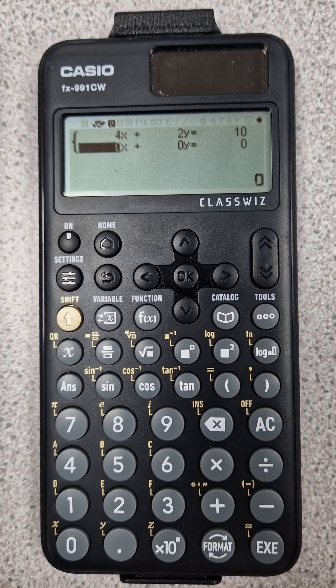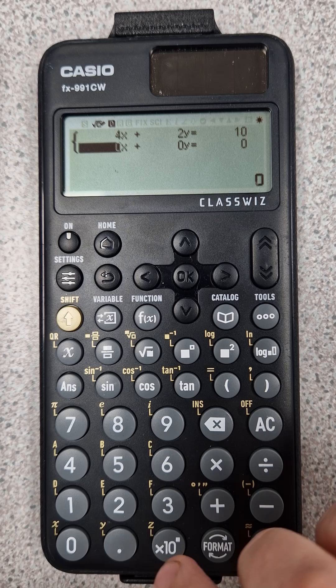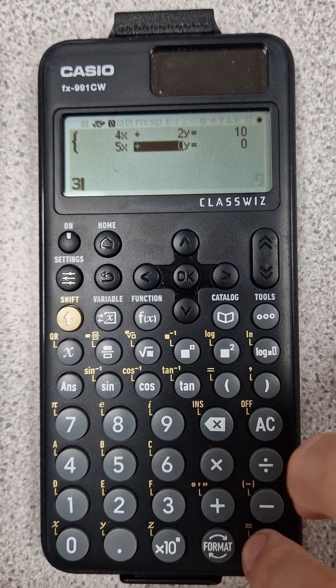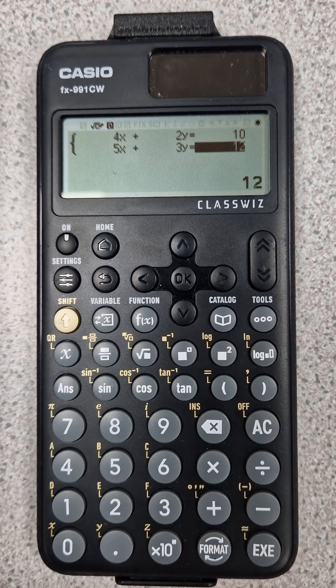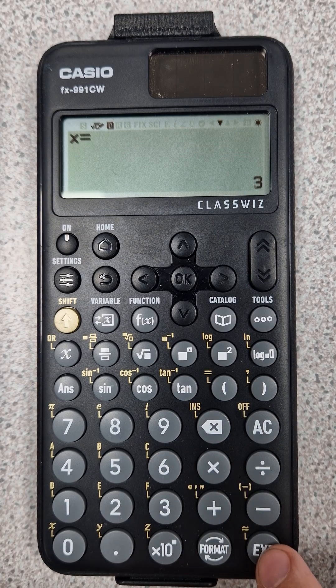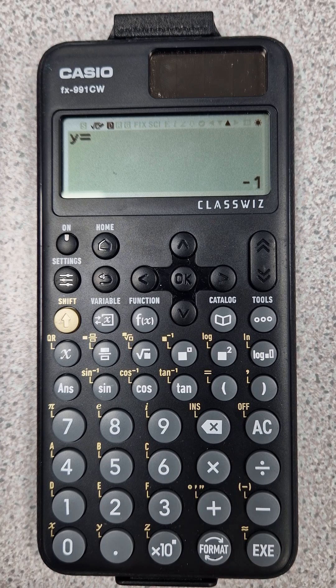And then we're on to the second equation. So now I've got 5x plus 3y equals 12. So 5, 3, 12. Now if I click execute, I get my solutions. So I have x equals 3 and y equals minus 1.